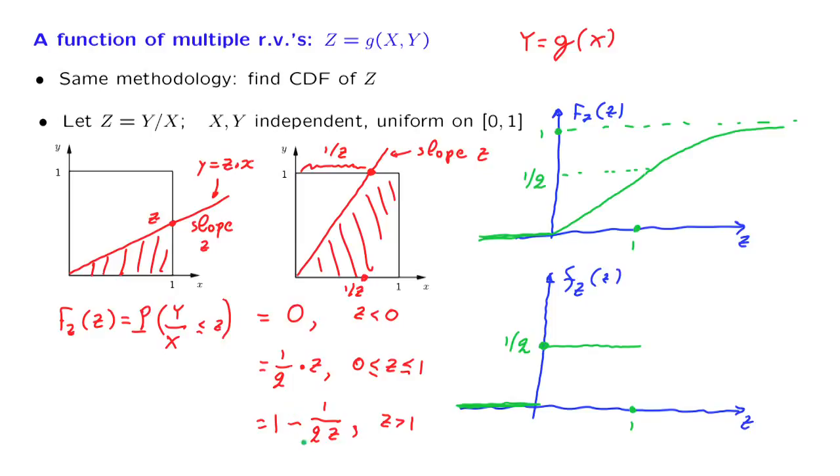And finally, in this region, this is the formula for the CDF. When we take the derivative, we get the expression 1 over 2z squared, which is a function that decreases as z goes to infinity, so it has a shape like this one.